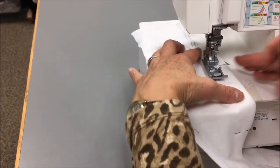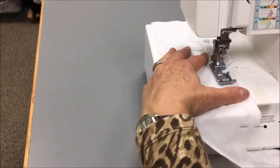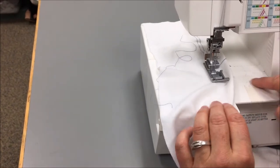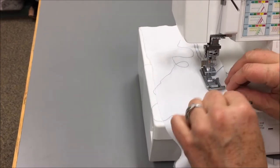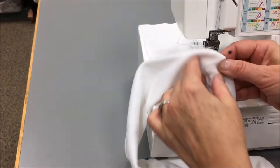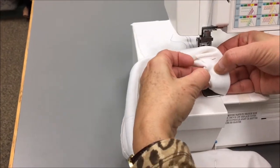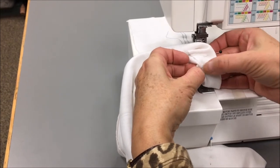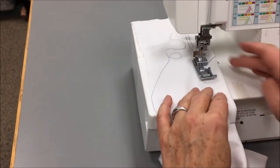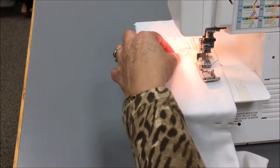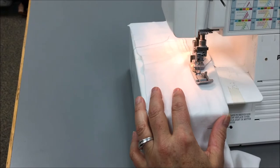Raise my presser foot, lower it. There are numbers on the power table. The ones in the back are centimeters, the ones in the front are inches. You want to just make sure that both needles are going to hit onto this fabric fold back here. We can always trim off whatever is excess. So we'll turn the machine on and get started.